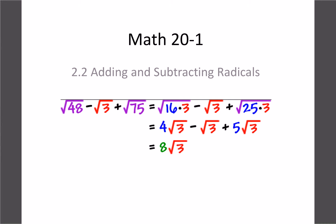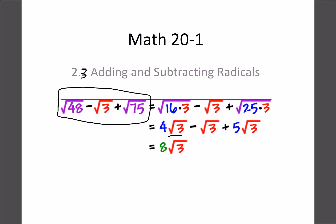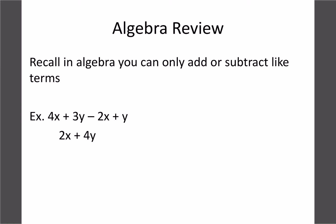We spent the last few days looking at converting radicals from mixed radicals to entire radicals. We're going to move on now and start looking at operations with these. Today we're going to look at adding and subtracting, and the next lesson we'll do multiplying and dividing. For example, root 48 minus root 3 plus root 75 can actually be combined to get an answer of 8 root 3.